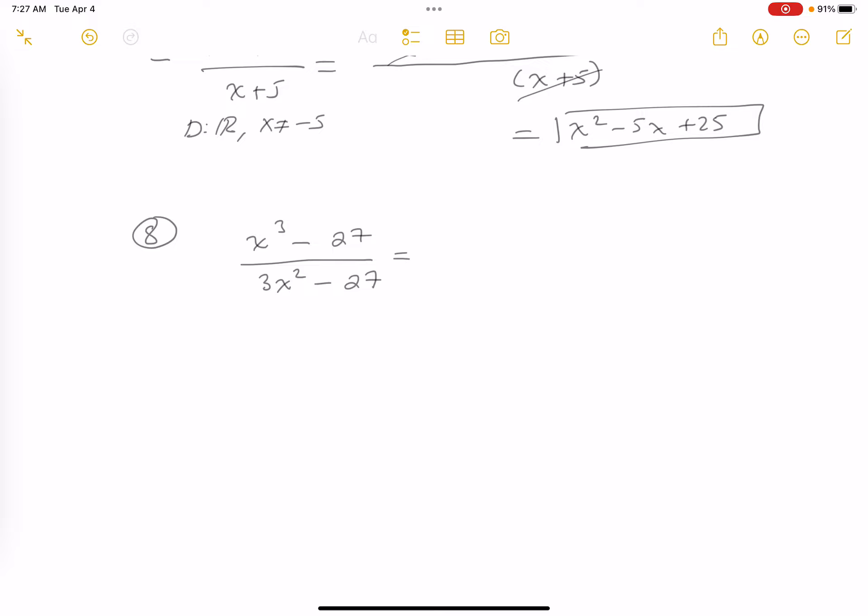I'm seeing the top as that difference of perfect cubes. Let me just remind you that a cubed minus b cubed is equal to a minus b times a squared plus ab plus b squared.